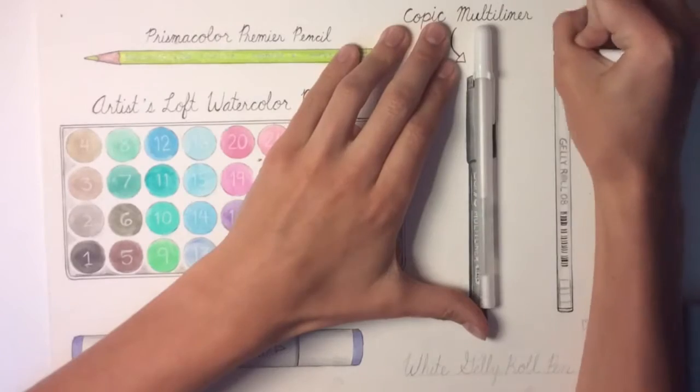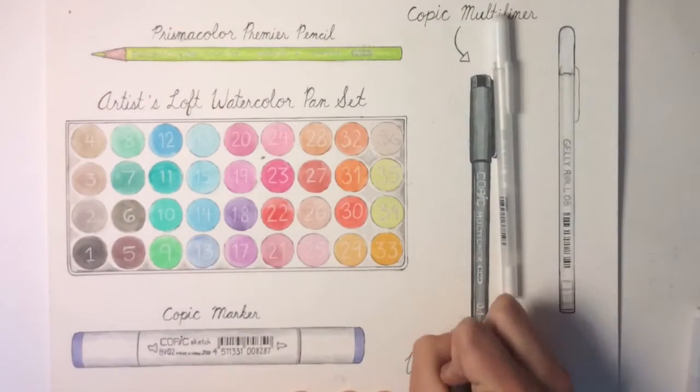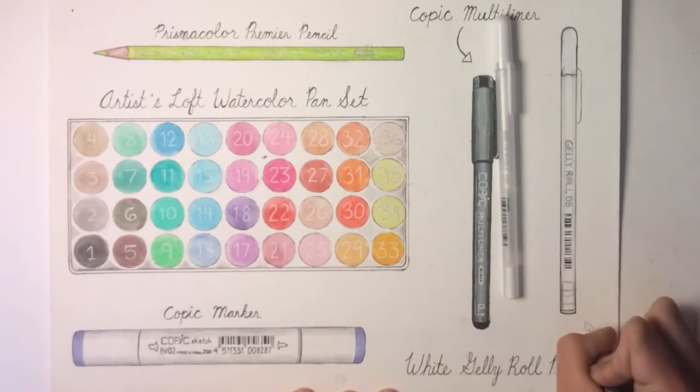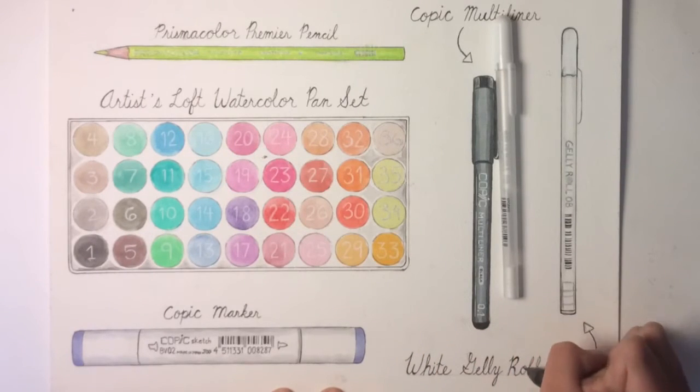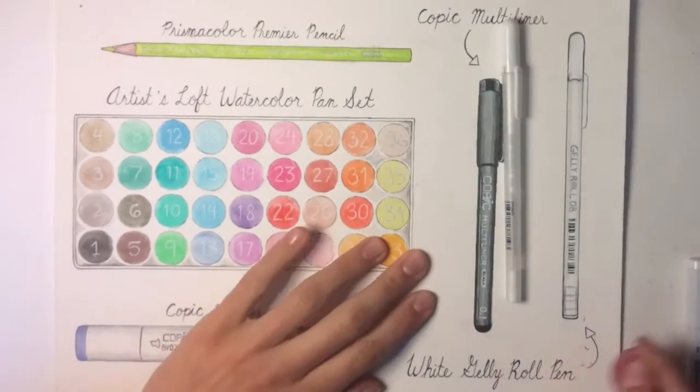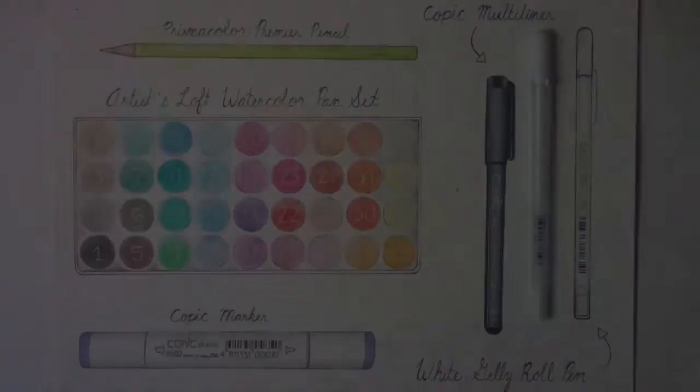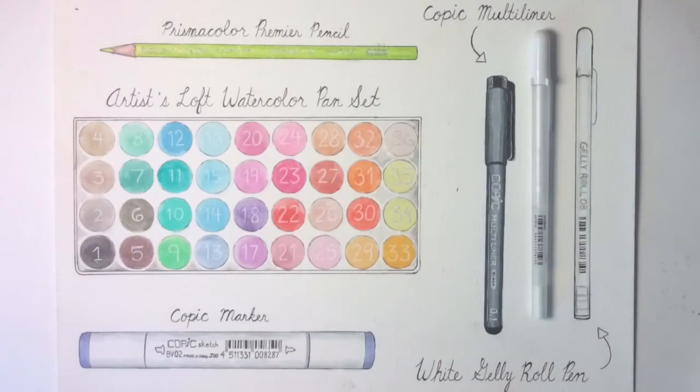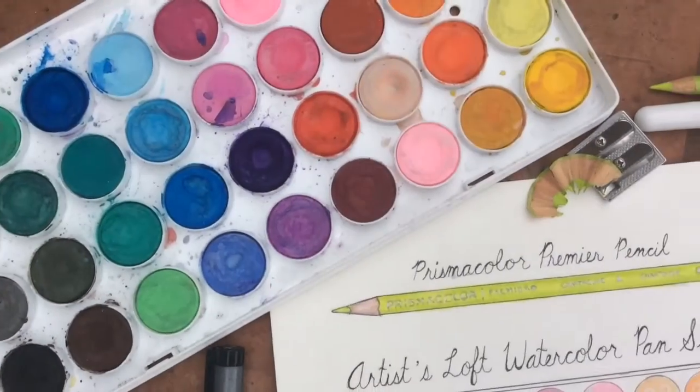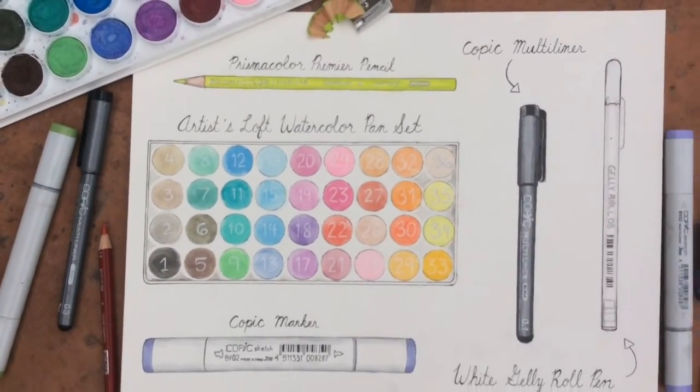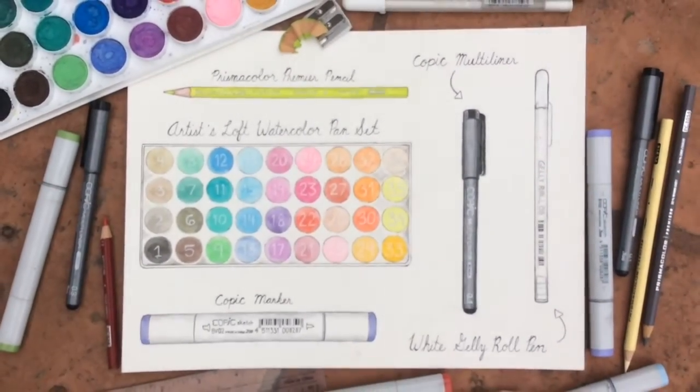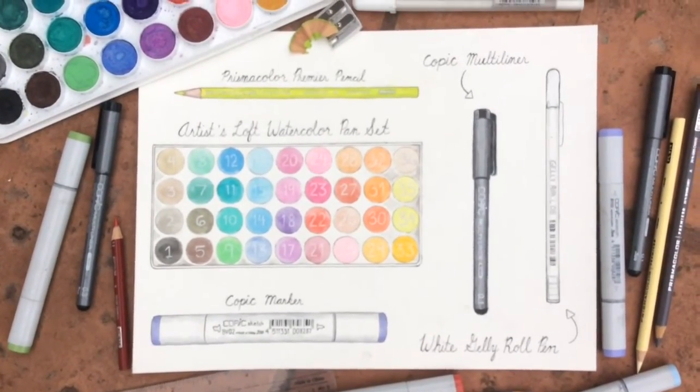So this next art supply I'm working on is my Jelly Roll pen. And these are just so beautiful. I always just get the white one because that's what I need. I use it for highlights and eyes, highlights just in general highlights. I mean, like erasing my mistakes. If I go outside the lines, just get yourself a white gel pen. And I recommend Jelly Roll because they're amazing. They last a long time and they go on the paper really smoothly. So yes.